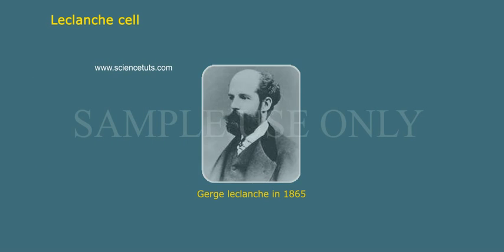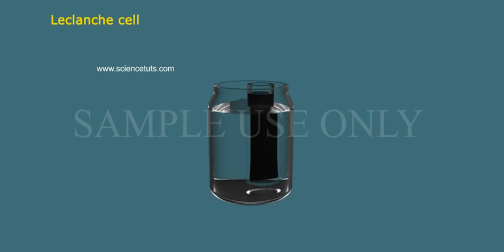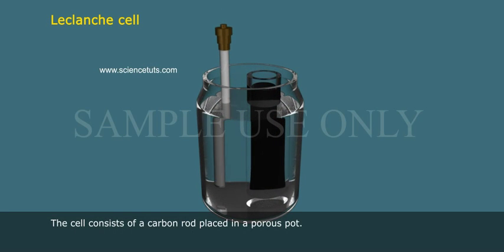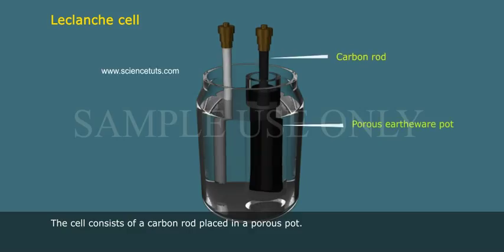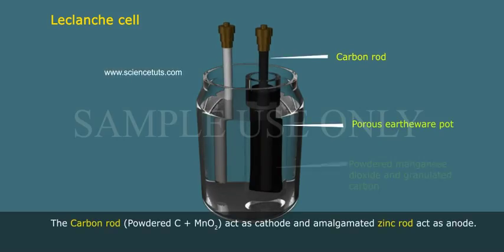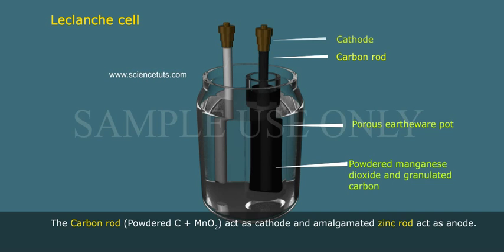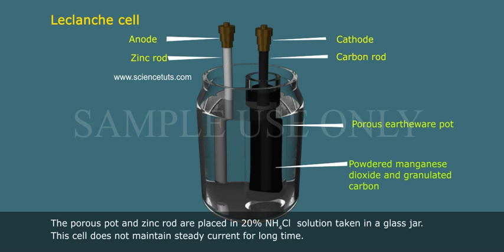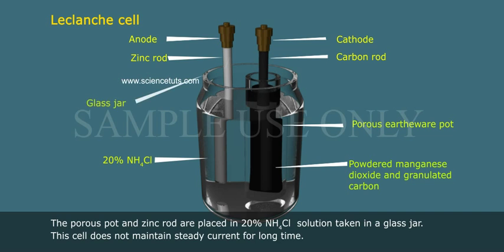Leclanchè cell: Invented by George Leclanchè in 1865. The cell consists of a carbon rod placed in a porous pot. The carbon rod, with powdered C plus MnO₂, acts as the cathode, and an amalgamated zinc rod acts as the anode. The porous pot and zinc rod are placed in 20% NH₄Cl (ammonium chloride) solution in a glass jar. This cell does not maintain a steady current for a long time.